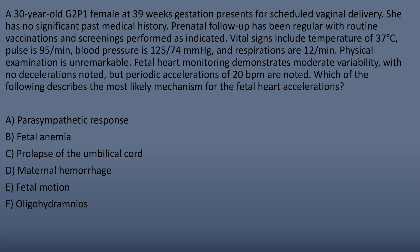A 30-year-old G2P1 female at 39 weeks gestation presents for scheduled vaginal delivery. She has no significant past medical history. Prenatal follow-up has been regular with routine vaccinations and screenings. Vital signs include a temperature of 37, pulse of 95, blood pressure of 125 over 74, and respirations of 12. Physical exam is unremarkable. Fetal heart rate monitoring demonstrates moderate variability with no decelerations noted, but periodic accelerations of 20 beats per minute are noticed. Which of the following describes the most likely mechanism for the fetal heart accelerations?